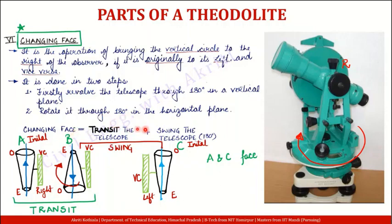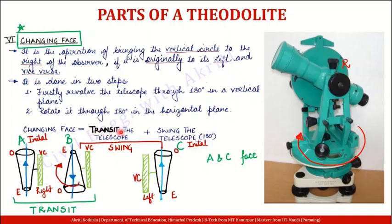Changing face mein transit hai first step, aur second step kya hai — swinging the telescope — aur dono mein aap rotation 180 degrees se de rahe hain respectively. Issi tariqe se agar aapka vertical circle left hand side pe ho initial position mein, aap us ko right hand side mein le ke aa sakte hain — aapne simply kya karna hai, pahle aapne telescope ko transit karna hai 180 degrees se, aur phir us ko swing kar dena hai 180 degrees se. To baaki saari cheezein same rehengi, sirf aapke vertical circle ki position change ho jayegi.